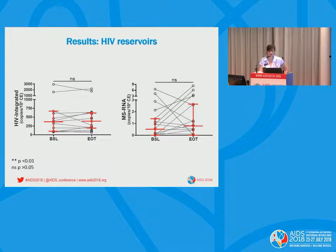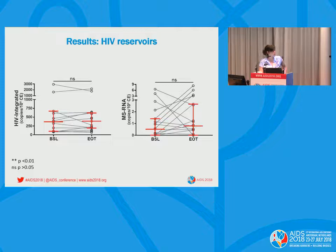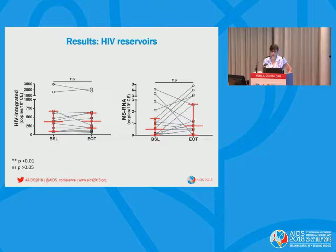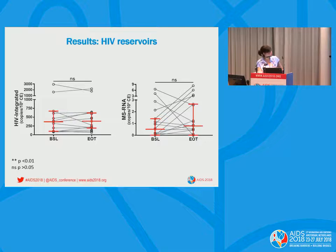To evaluate HIV reservoirs, we separated PBMCs from every sample. We have results from baseline and end of treatment; we are still evaluating the one-year samples. After separating PBMCs, we separated CD4 cells and measured total integrated HIV DNA and different forms of HIV RNA. There was no difference between samples in integrated HIV DNA, and also no difference in multiply-spliced RNA.